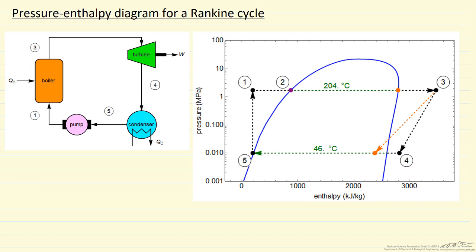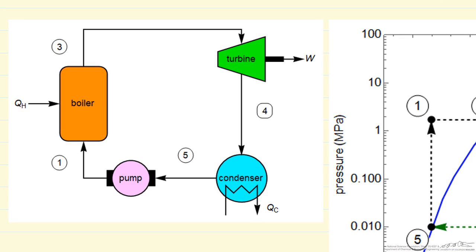I'm going to describe a Rankine cycle on a pressure enthalpy diagram. Remember a Rankine cycle is a method for converting heat into work by typically using steam, and so the process is shown on the left where we feed here at 1 a liquid into a boiler to create superheated steam.